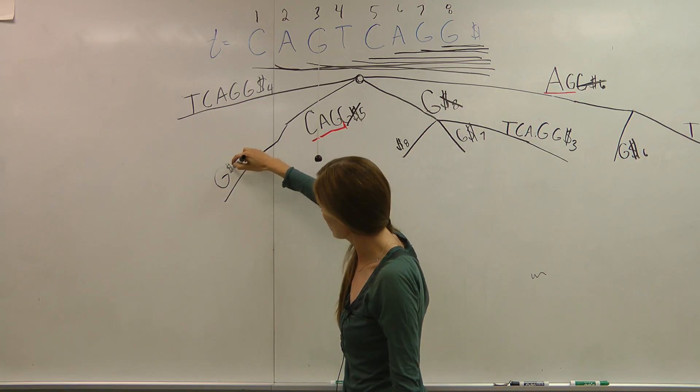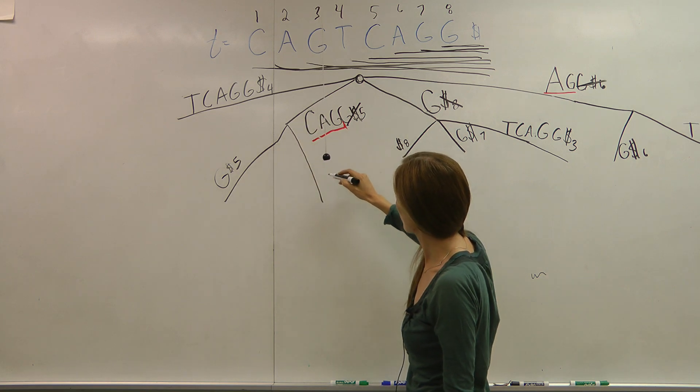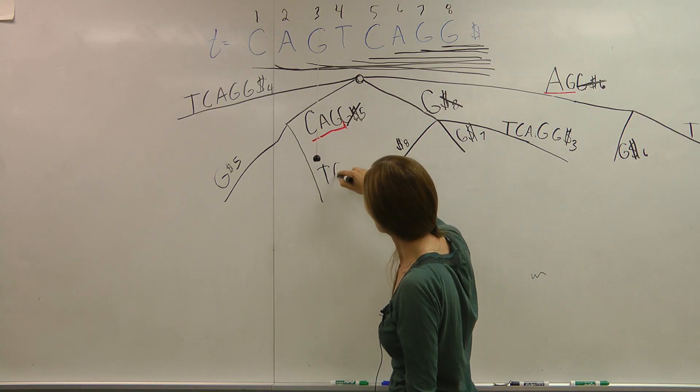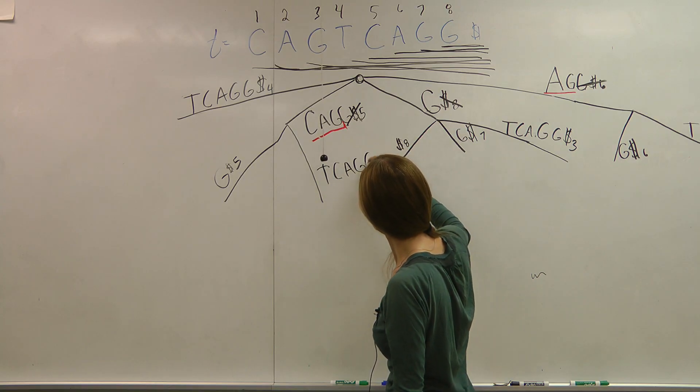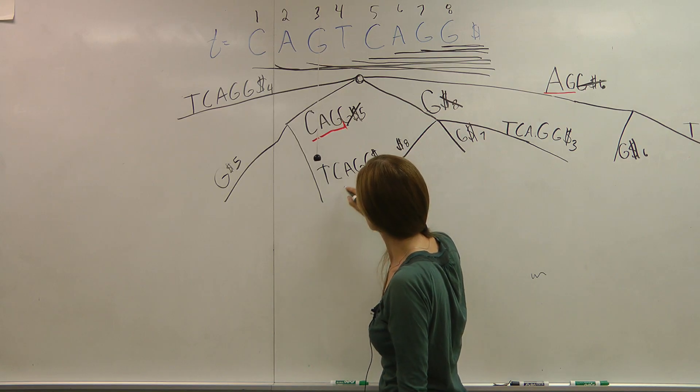Dollar sign at index 5. And we also have another option after CAG now, which is T, C, A, G, G. And it starts at index 1.